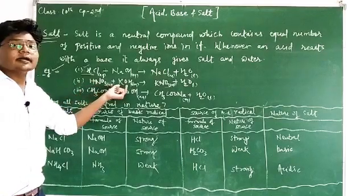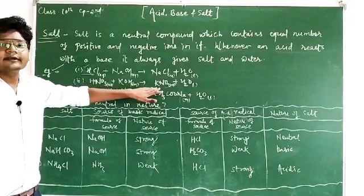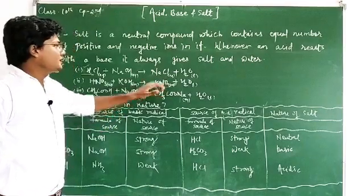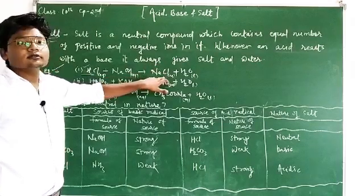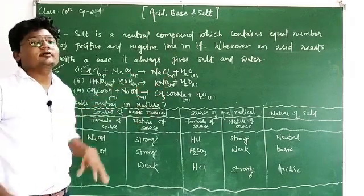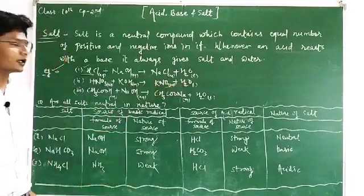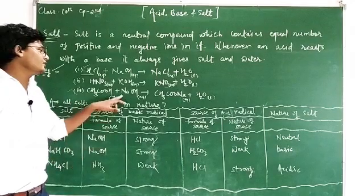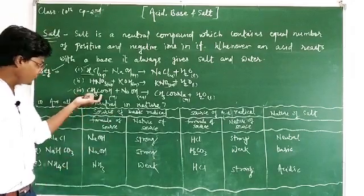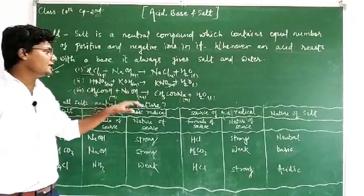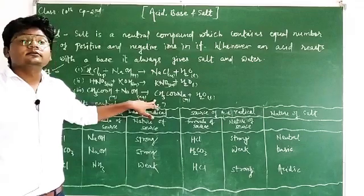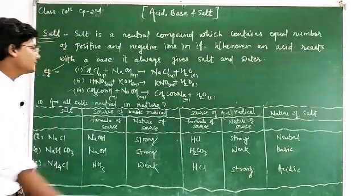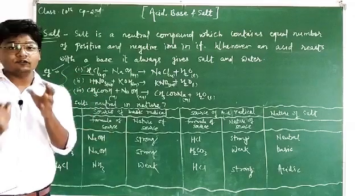The third reaction is acetic acid (CH3COOH) reacting with sodium hydroxide. The acid reacts with the base, making a salt which is sodium acetate, with the elimination of water. In all three examples you can see an acid reacting with a base giving a salt with the elimination of water.